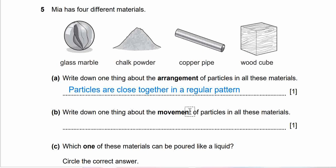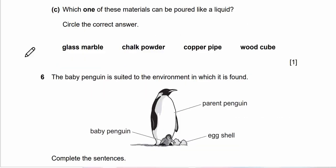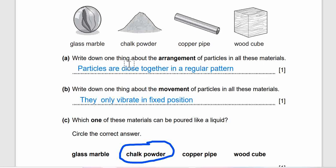Next we move on to 5B. Question 5B says, write down one thing about the movement of particles in all these materials. Get ready. What's your answer? Solid, they only vibrate in fixed position. They don't move around. Let's move on to 5C. Question 5C says, which of these materials can be poured like a liquid? Circle the correct answer. And here's the explanation. So the answer is chalk powder. This can be poured like liquid.